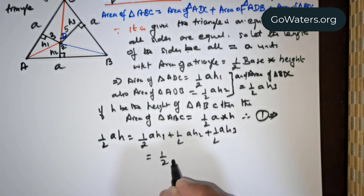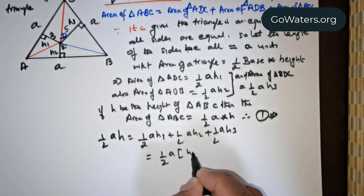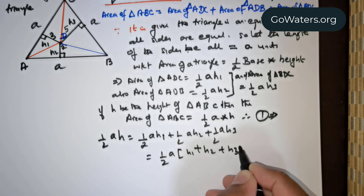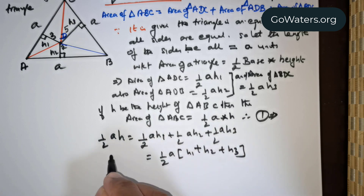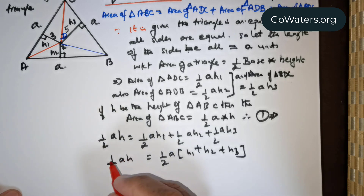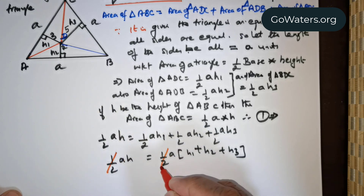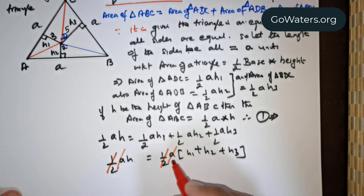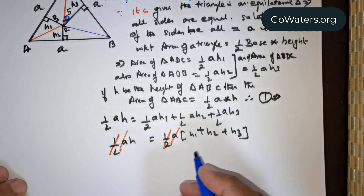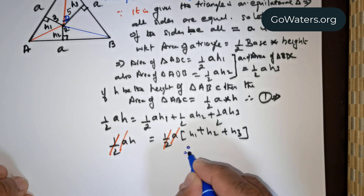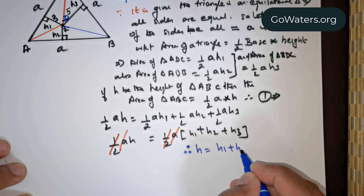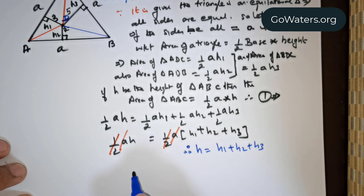Now take one-half and A out as common factors. You get H1 plus H2 plus H3 on the right, and one-half times A times H on the left. The one-half can be cancelled on both sides and A can be cancelled on both sides. Therefore, H equals H1 plus H2 plus H3.